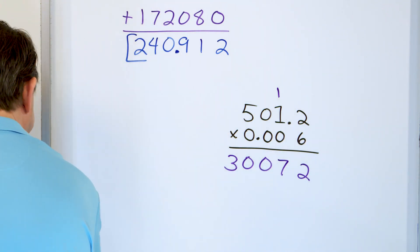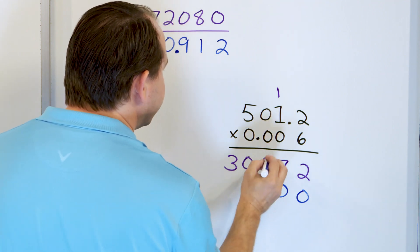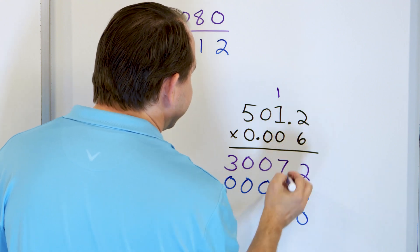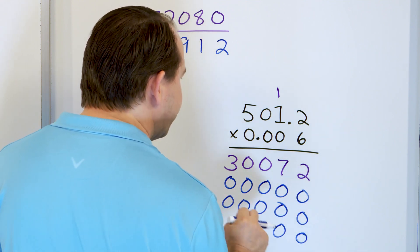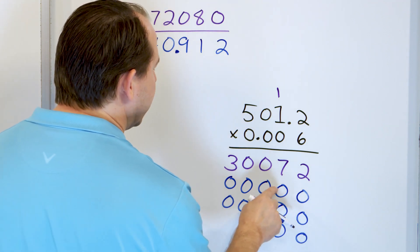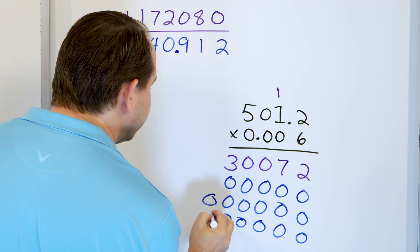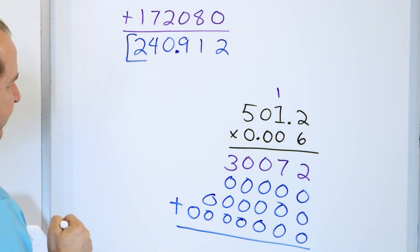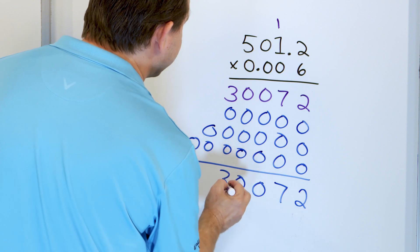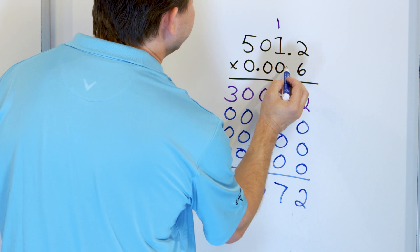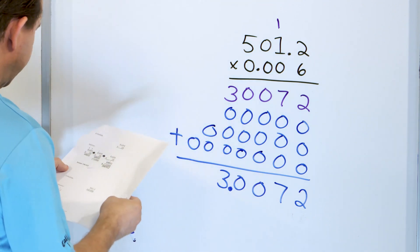If we multiply by the next 0 we drop a 0 and get all zeros: 0 times 0, 0 times 1, 0 times 0, 0 times 5 are all 0. Then for the final 0 we drop two zeros and again get all zeros. So none of those zeros do anything. We're just going to have 2 and 7 from the main row, and a 0 here and a 0 here, and then a 3. Now count the decimal digits: 1, 2, 3, 4 digits after the decimal, so it must be 3.0072.